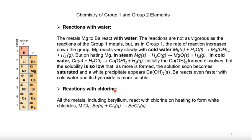Reaction with chlorine: all metals of group two, including beryllium, react with chlorine to give white metal chlorides.